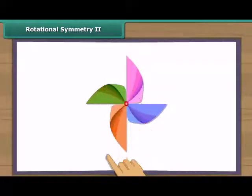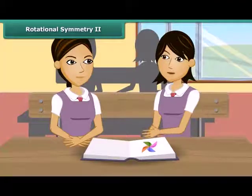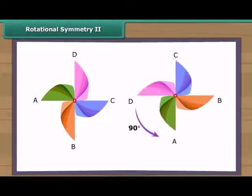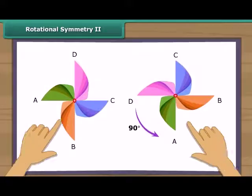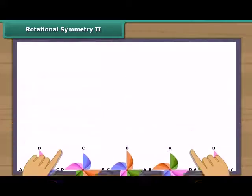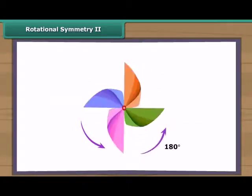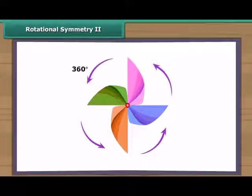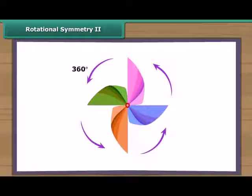This is a paper windmill. It has rotational symmetry. If you rotate it by 90 degrees about the fixed point, the windmill will look exactly the same. In a full turn, there are four positions — at rotations of 90 degrees, 180 degrees, 270 degrees, and 360 degrees — when the windmill looks exactly the same. Therefore, we can say that it has a rotational symmetry of order 4.